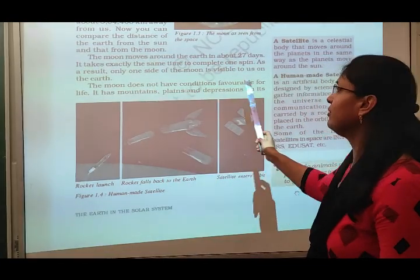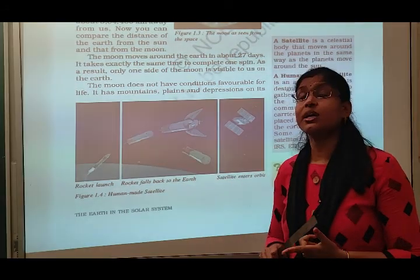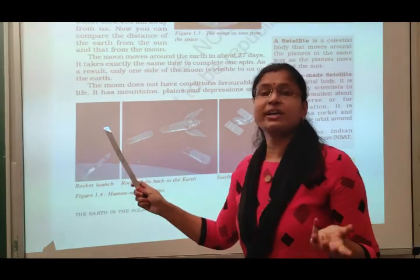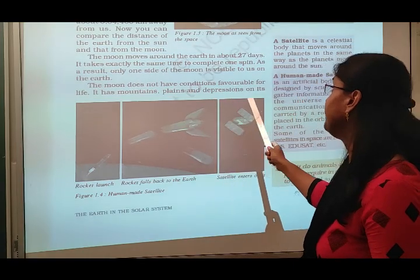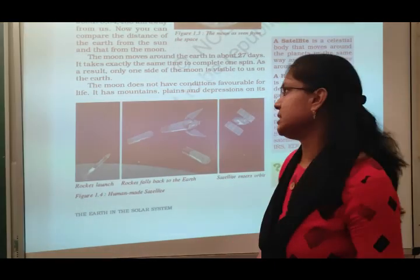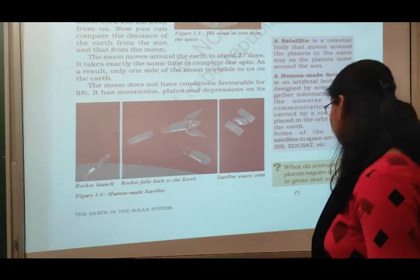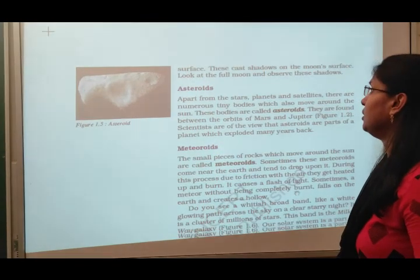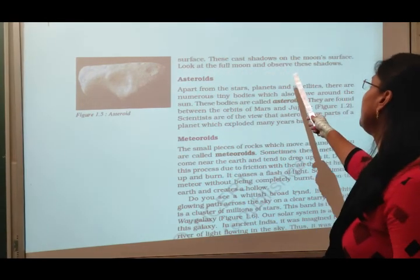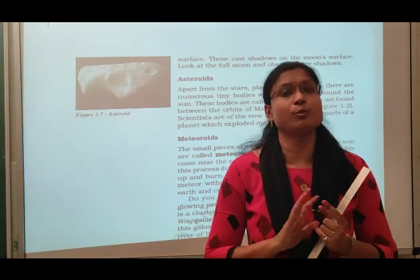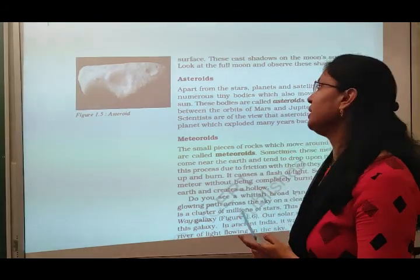The moon does not have conditions favorable for life — air and water are not available on the moon. It has mountains, plains and depressions on its surface. Depressions means hollow shapes on the surface. These cast shadows on the moon's surface. When we look at the full moon, we can observe these shadows.